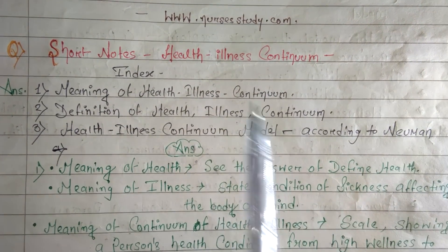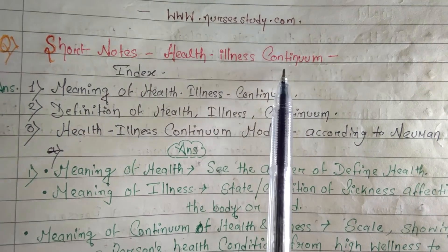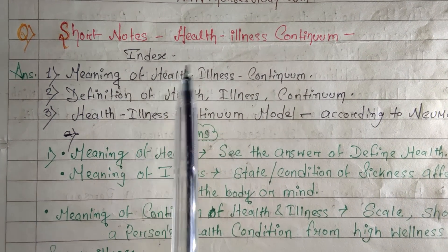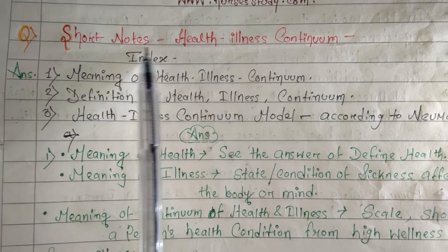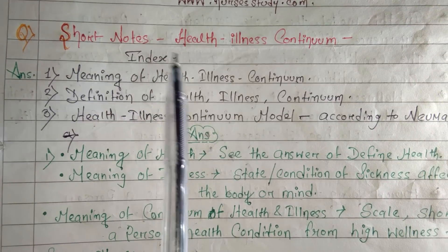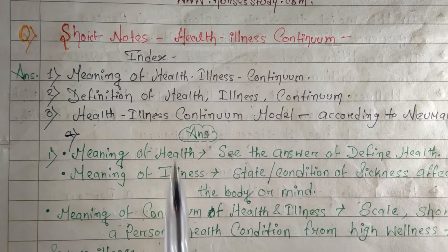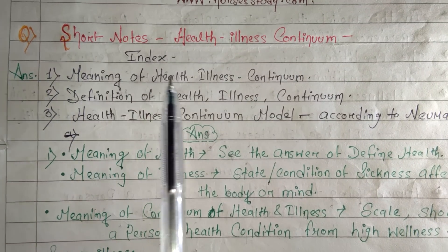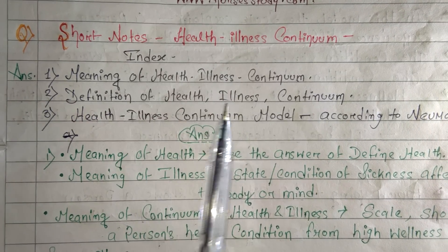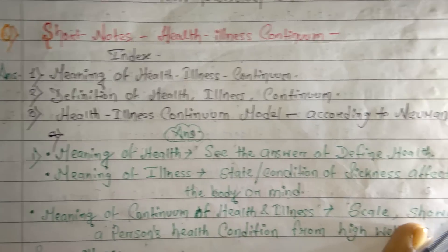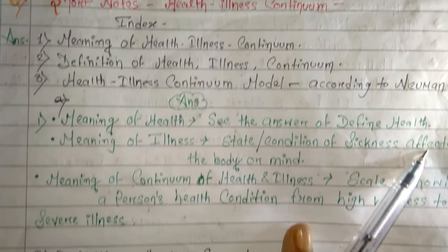Now, a very important topic: the health-illness continuum. If they ask you to write short notes on the health-illness continuum, you can first make an index, since fundamental answers are very lengthy. I am going to include the meaning of health-illness continuum, the definition of health-illness continuum, and the health-illness continuum model according to Newman. An index will help you gain some extra marks.